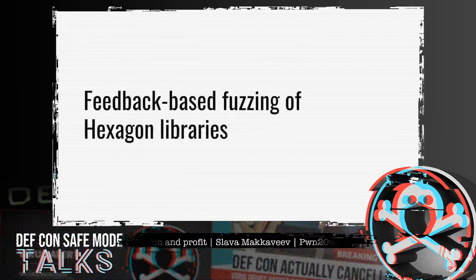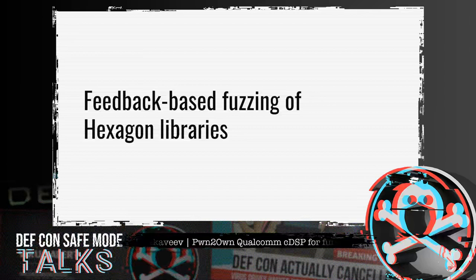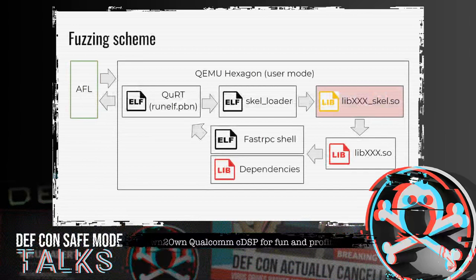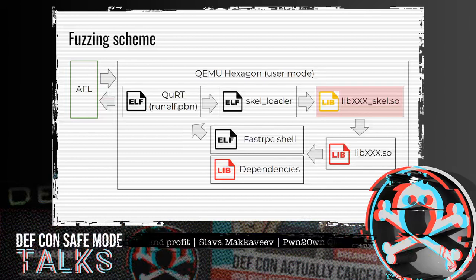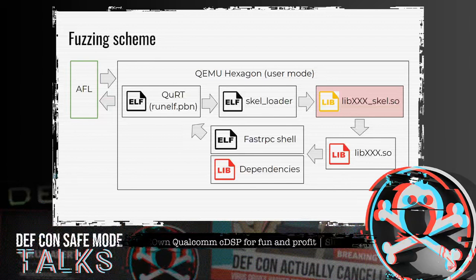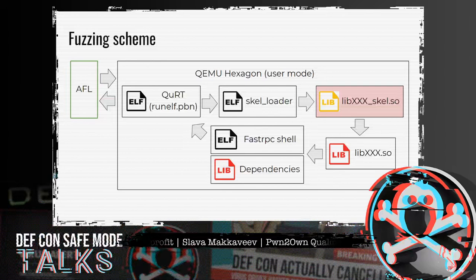The major goal of the research was to find a way to execute custom code on a DSP by bypassing Qualcomm's signature. To do this, we had to discover and exploit a vulnerability in a DSP-running library. DSP libraries are proprietary Hexagon ELFs. The easiest way to instrument a Hexagon executable is to use the open-source emulator QEMU. Hexagon instruction set support was added to QEMU only at the end of 2019, and we fixed many bugs to run real DSP libraries in user mode. To fuzz on an Ubuntu PC, we used American Fuzzy Lop AFL in combination with QEMU. We prepared a simple program called Skeleloader that loads and invokes the skeleton library.